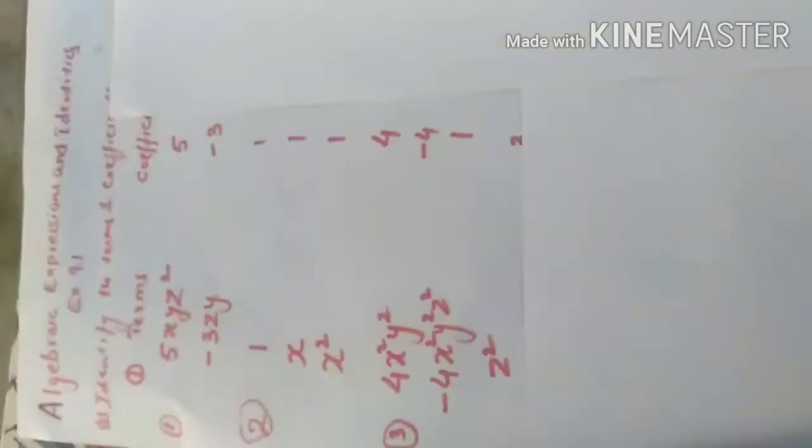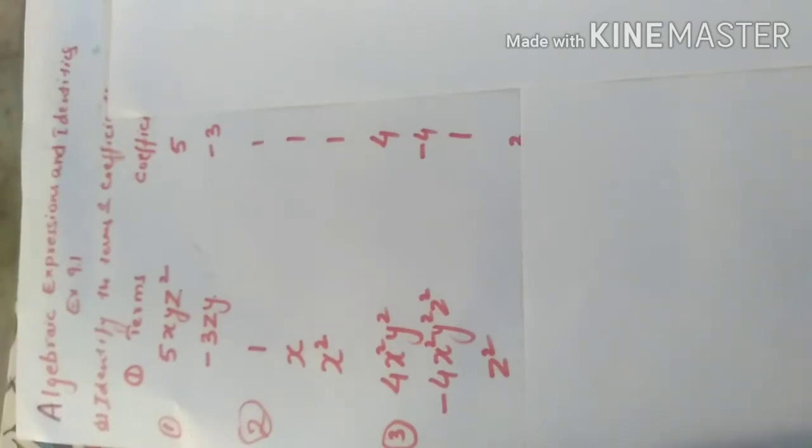Next is 4X square Y square minus 4X square Y square Z square plus Z square. So these are the three terms. And the coefficient is 4, minus 4 and 1.